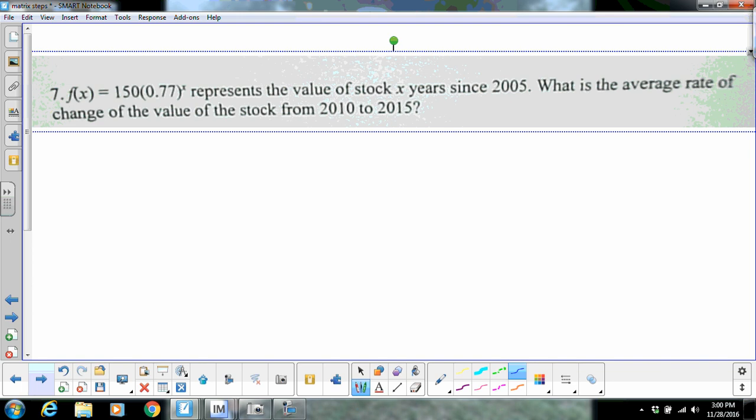All right, all you're doing here, okay, this right here says years since 2005. Remember that rate of change is simply slope. Okay, so 2010 is 5 years since 2005, and 2015 is 10 years. So those are your X values.